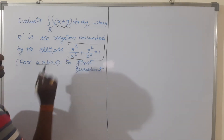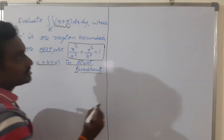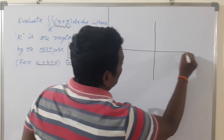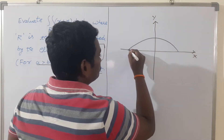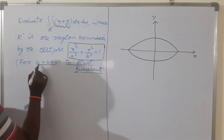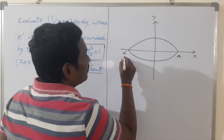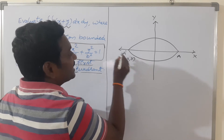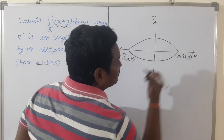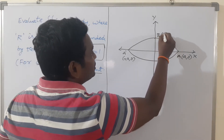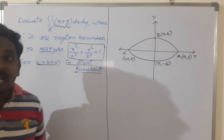This is the standard equation of the ellipse, which is in the first quadrant. Everybody knows that the shape of the ellipse. Since a is greater than b along the x-axis, the major axis coordinates are minus a comma 0 and a comma 0. And similarly, b gives coordinates 0 comma b and 0 comma minus b. This is the rough graph of the ellipse.